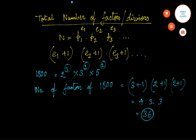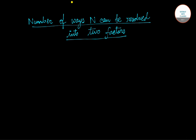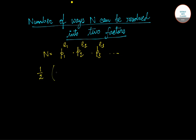Coming to the next set of formulas — how to find the number of ways a number can be resolved into 2 factors. If n equals p1 to the power e1 into p2 to the power e2 into p3 to the power e3 and so on, then the number of ways n can be resolved into 2 factors equals half of (e1+1) into (e2+1) into (e3+1) and so on. This is just half of the total number of factors.